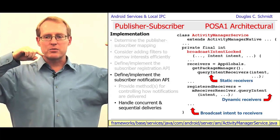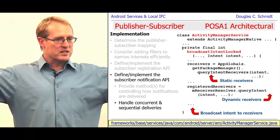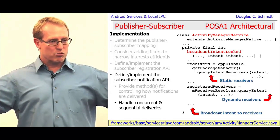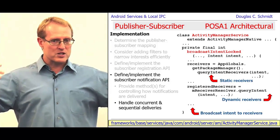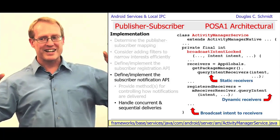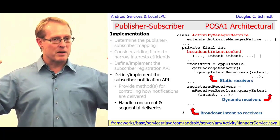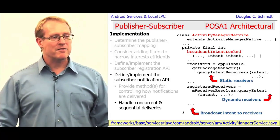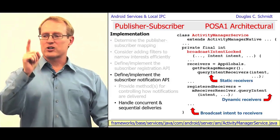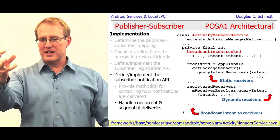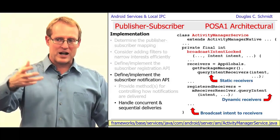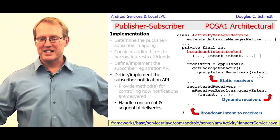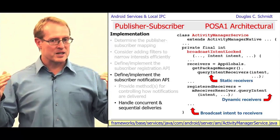If you're not doing an ordered broadcast, it tries to send all dynamically registered receivers concurrently — it just goes through a while loop going send, send, send. That's because those processes, activities, and services are assumed to be up and running, so they get delivered the intents very fast. All things registered statically via manifest files, however, are delivered one at a time, because you have to start up the activity or the service and then deliver to the broadcast receiver. They don't want to start up all these processes unnecessarily, so they do them one at a time.